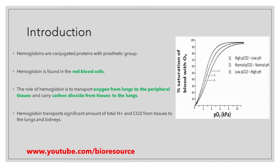Before going into the details of the Bohr effect, let's see what hemoglobin is and some introduction about hemoglobin. Hemoglobins are conjugated proteins with a prosthetic group. Hemoglobin is found in the red blood cells — the blood cells are red in color because of the heme present in the hemoglobin. The role of hemoglobin is to transport oxygen from the lungs to the peripheral tissue, carry carbon dioxide from tissue to the lungs, and transport significant amounts of H⁺ ions and carbon dioxide from tissue to the lungs and kidneys.